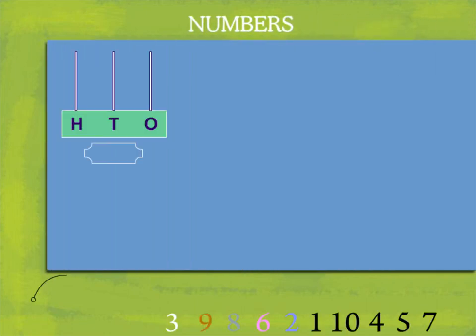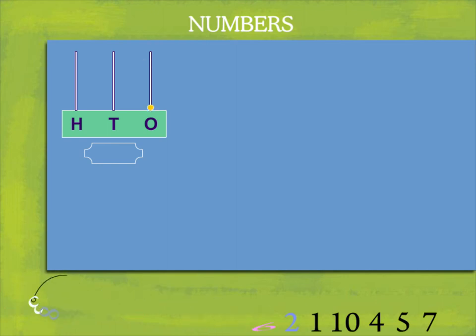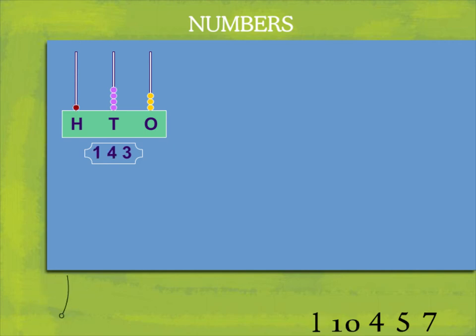Numbers. Let's make numbers. Here is the first number: three ones — one, two, three — and four tenths. One hundredths is one hundred and forty three.